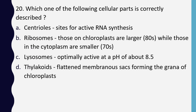Question 20. Which one of the following cellular parts is correctly described? Centrioles — site of active RNA synthesis; ribosomes — those on chloroplast are larger while those on cytoplasm are smaller; lysosomes — optimally active at pH of about 8.5; thylakoids — flattened membrane sac forming grana of the chloroplast. Correct answer is option D: thylakoids are the flattened membrane sacs forming the grana of the chloroplast.